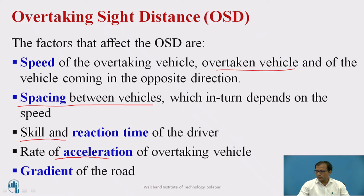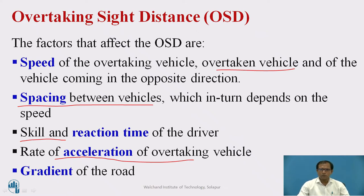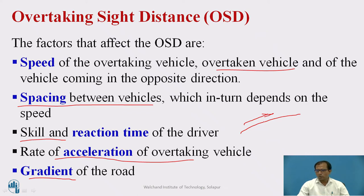The rate of acceleration of the overtaking vehicle is also a factor — when the opportunity arises, the driver wants to overtake, and the vehicle's acceleration affects the overtaking sight distance length. Another factor is the gradient of the road. When a vehicle is going uphill, the required stopping or overtaking sight distance is less. But when the vehicle is going downhill, it travels at higher speed and both momentum and gravity act in the downward direction, so more overtaking sight distance is required.